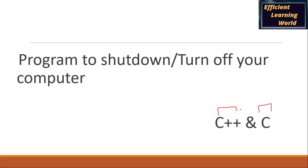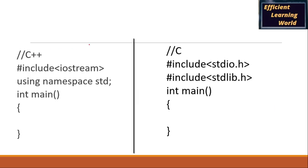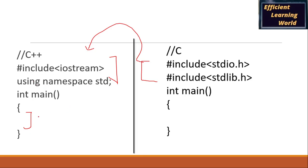This code is basically for C++, but you can also use it in C, because C++ is the advanced version of C. There is a minor difference between the syntax of C++ and C. In C++ we mostly use the iostream header file, while in C we mostly use stdio.h and stdlib.h. You can use these header files in C++ as well. I will explain the code and you just have to write it inside the main function.